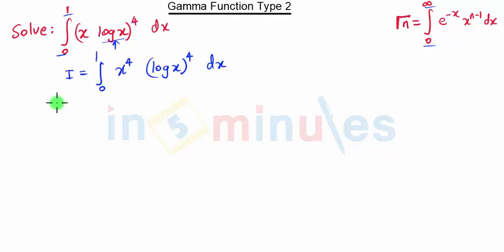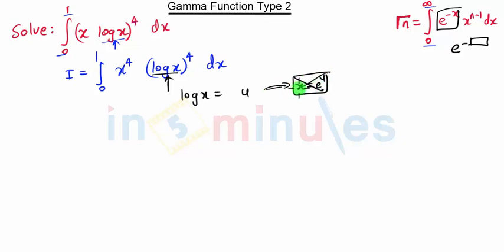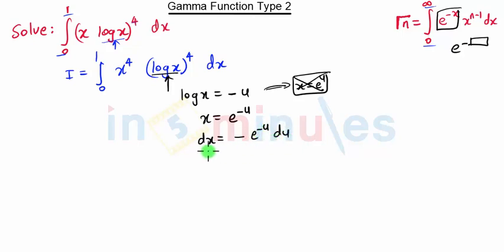This is of Type 2, and in Type 2 we substitute log of x equal to some other variable. We put log of x equal to u, but here we want e raised to minus of some term. When we put log of x equal to u, we get x equal to e raised to u — but we do not want e raised to u, we want e raised to minus u. So we put log of x equal to minus u, then we get x equal to e raised to minus u.